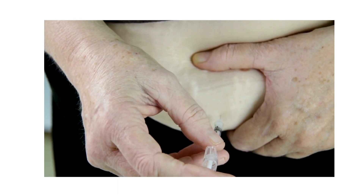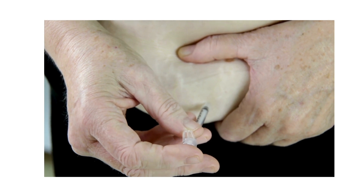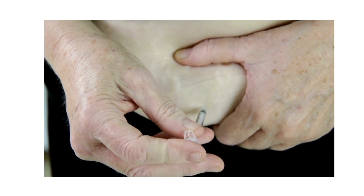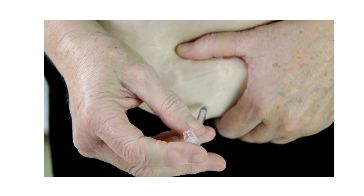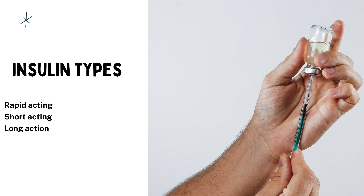Here's an individual who's self-administering insulin. Now that we've determined all the correct sites for administering insulin, it's important to know exactly what type of insulin we are going to be giving. Our three main types are rapid-acting, short-acting, and long-acting. It's very important that we understand the onset of action and the duration of these insulin types.